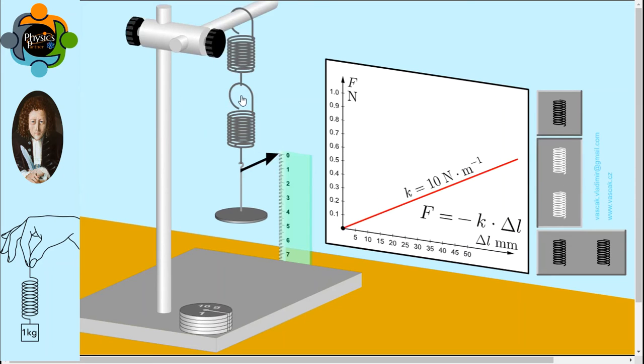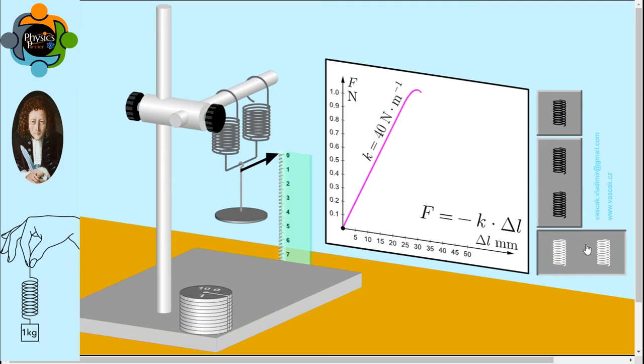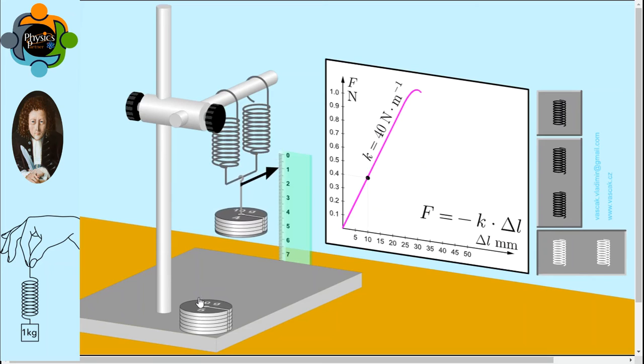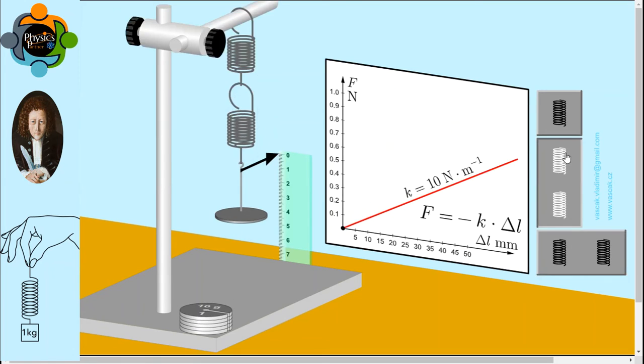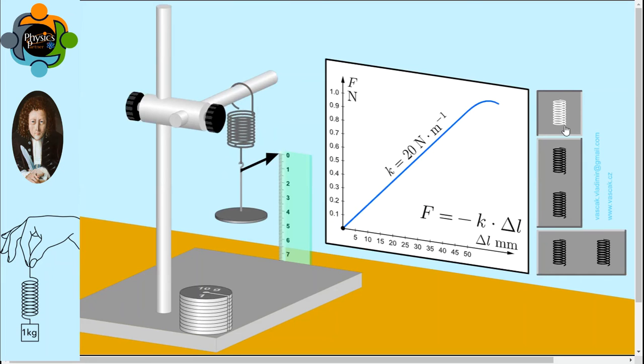So what happens if I take two springs parallel to each other? You can see it still follows Hooke's Law, but this time the value of k is high. It is 40 newton per meter and the slope is not towards x, its slope is towards y. The value of k has become double of it. It was 20, here it is double, 40, whereas in that case it was half. So this is how we can explain Hooke's Law in a simple manner.